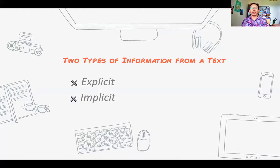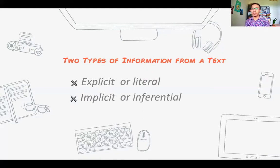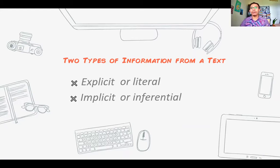Explicit is, you know, explicit — you can see it in the text; when you read it, you find that information. Implicit takes a little more effort to get. For our curriculum, explicit information is known as the literal information, which you learn in reading. And implicit information is also called inferential information or inference, which is the subject of our class this semester.